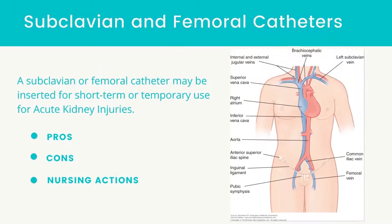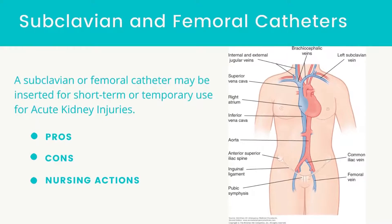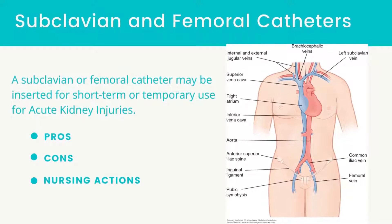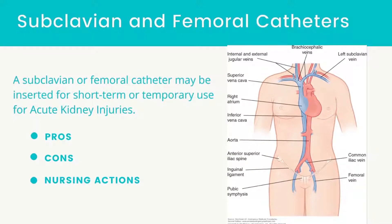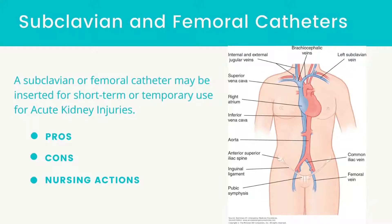Subclavian and femoral catheters. A subclavian or femoral catheter may be inserted for short-term or temporary use for acute kidney injuries. The catheter could also be used until a fistula or graft matures, which takes typically 4-6 weeks. A catheter may also be required when the patient's fistula or graft access has failed because of infection or clotting.